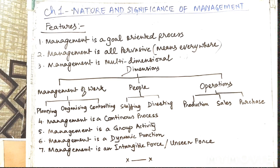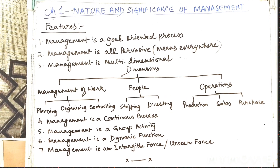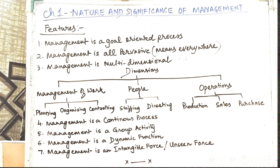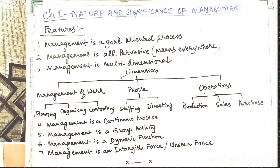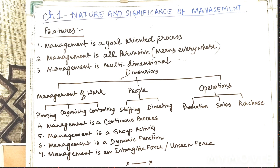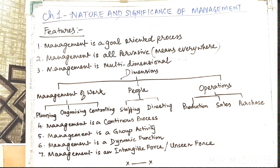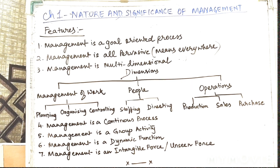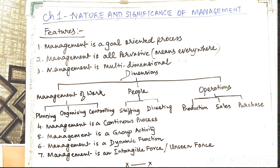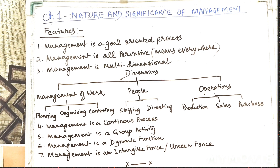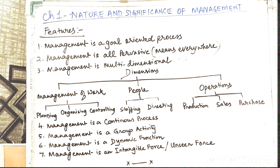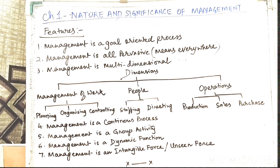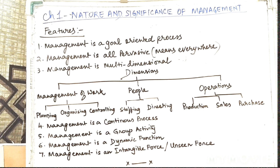The sixth one: management is a dynamic function. Dynamic here means how easily you can adapt to any change happening within the organization or outside the organization — it has to adapt to the changing environment. There are different dimensions of environment like social, legal, technological, and economic, and these changes are inevitable, so management needs to adapt to the changes of the environment.